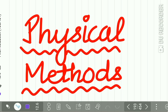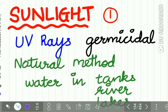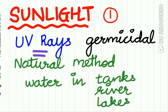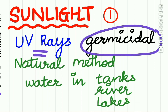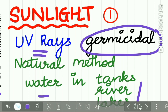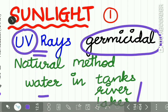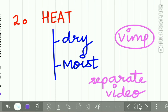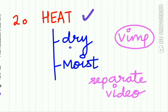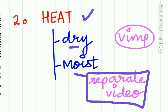The first physical method is sunlight. Sunlight has ultraviolet rays which are specifically germicidal. It is a natural method of sterilization of water present in tanks, rivers, and lakes because the UV rays in sunlight are germicidal. Heat sterilization is further divided into dry heat and moist heat, and we will be uploading a separate video on heat sterilization.